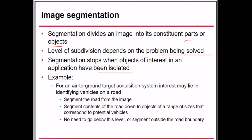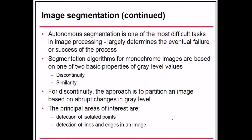For example, for an air-to-ground target acquisition system, the interest may lie in identifying vehicles on a road. We segment the road from the image, then segment the contents of the road down to objects of a size range corresponding to potential vehicles. There is no need to go below this level or segment outside the road boundary, since that is our object of interest.